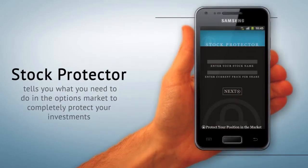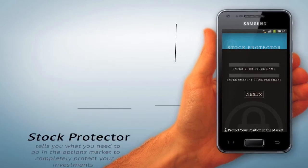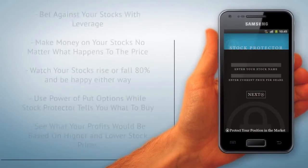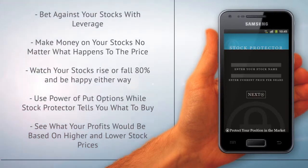Stock Protector is a mobile application available on your iPhone or Android device which tells you what you need to do in the options market to completely protect your investments. As long as you have a profitable position on a stock that trades options, Stock Protector will tell you how and what to buy to hedge out all risk in your position.